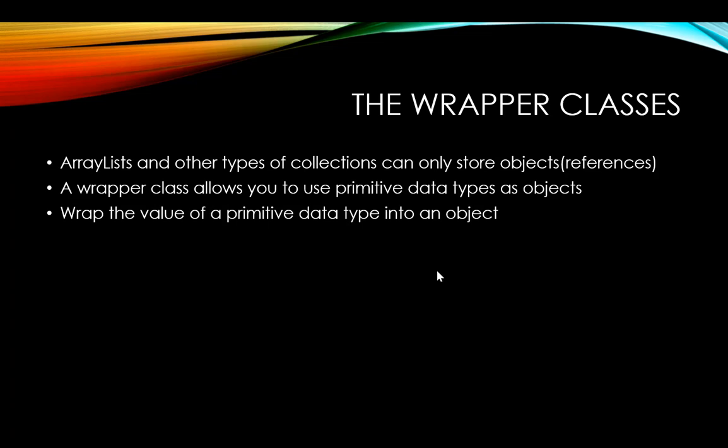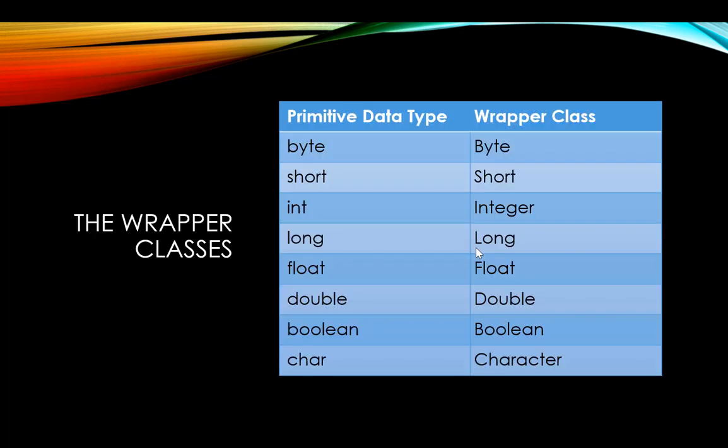The wrapper classes are also helpful if you are trying to convert strings into an integer or a double value. We also have other static methods in the wrapper classes that are useful for processing in our programs. For each primitive data type we will have a wrapper class that allows us to wrap that primitive data type value into an object.